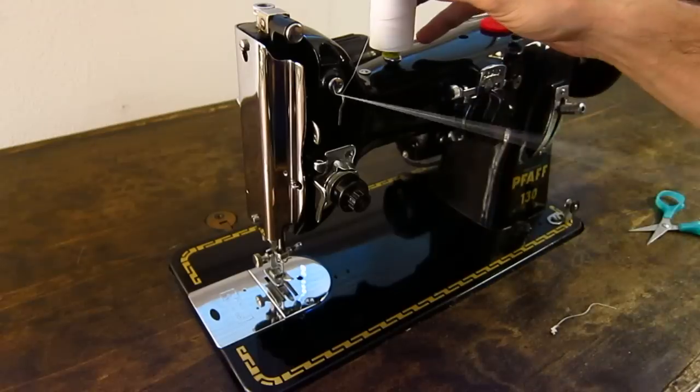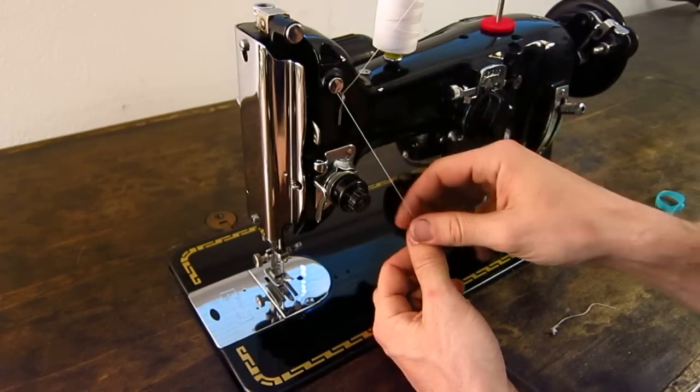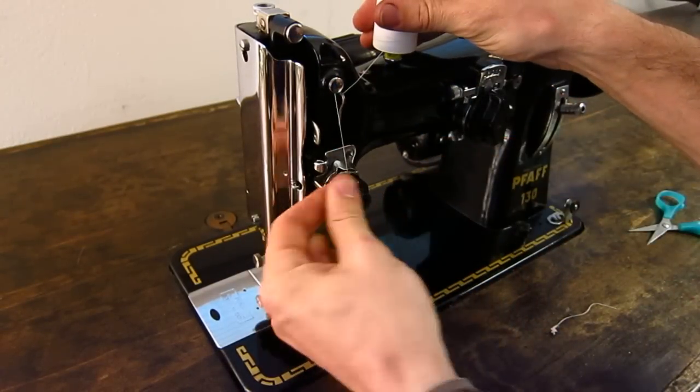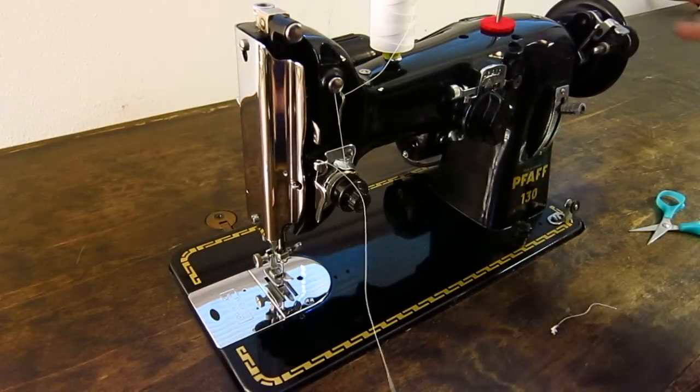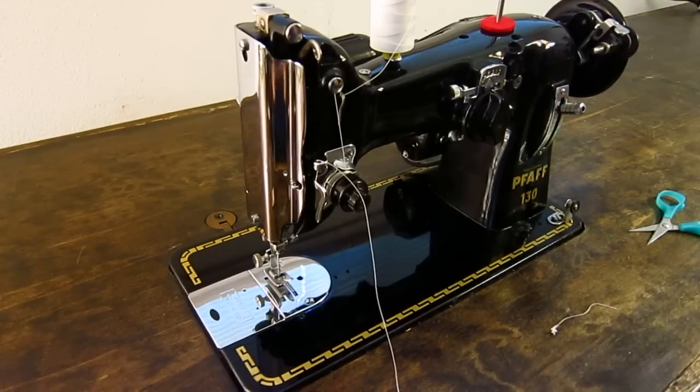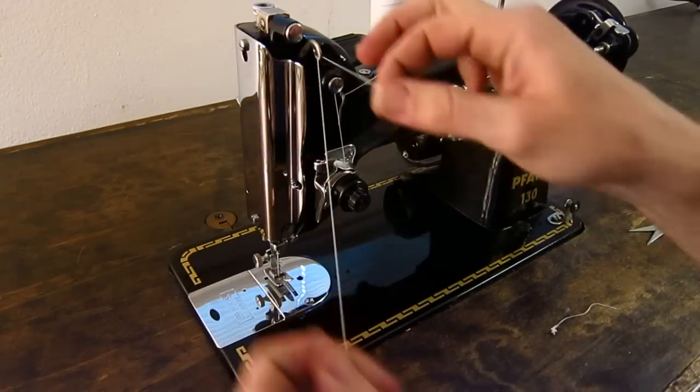So let's go ahead and thread the machine. It's pretty straightforward. You're going to bring it through the guide here, underneath the tension discs, underneath this little through the check spring, through this guide. Raise the take-up lever arm all the way to the top, run it through.